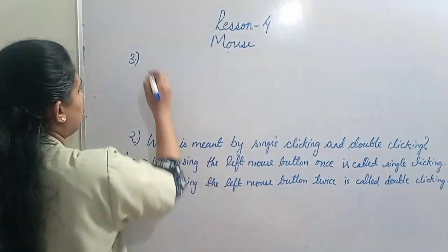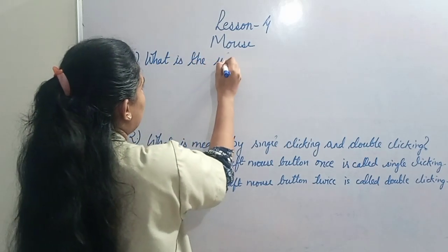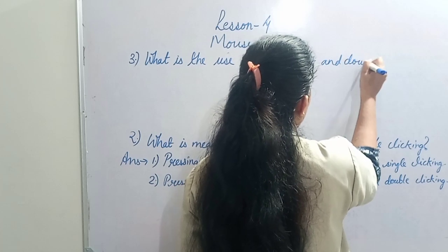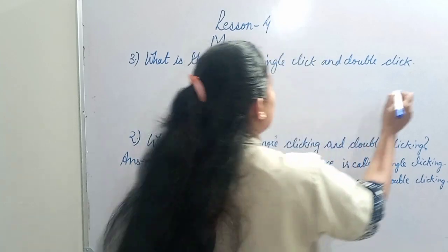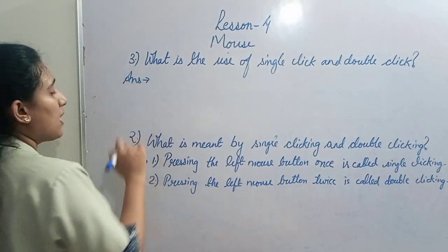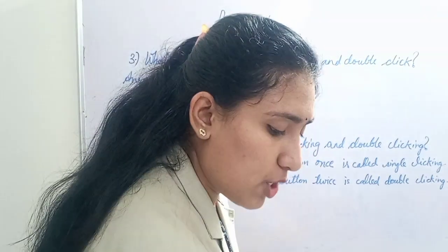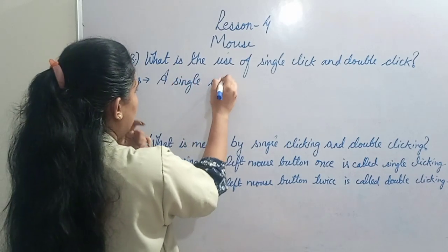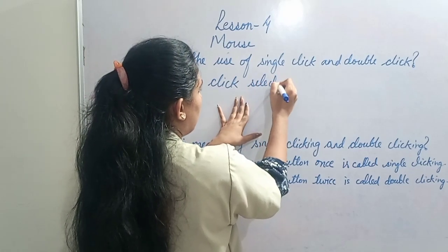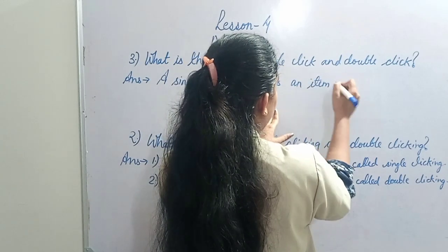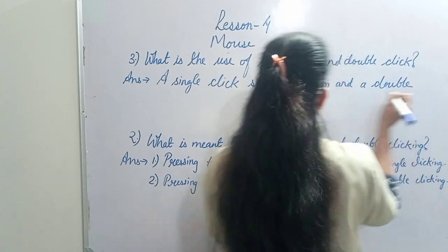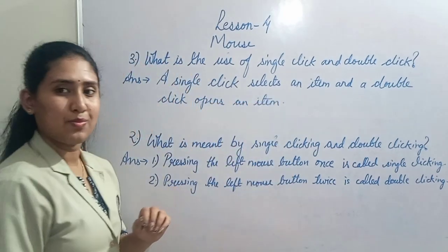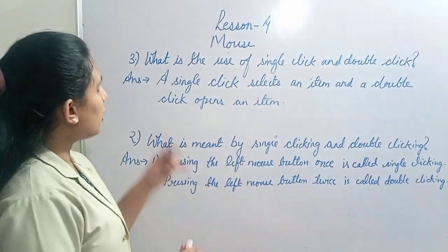The third question is: What is the use of a single click and a double click? The answer is: A single click selects an item, and a double click opens an item. So these are your three question answers for this lesson.